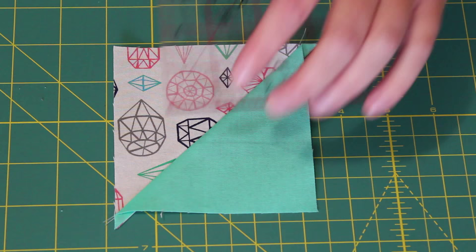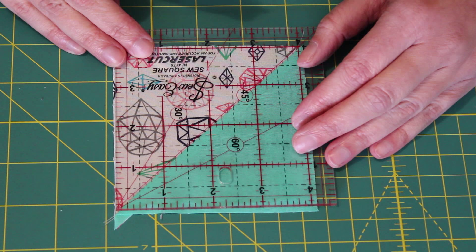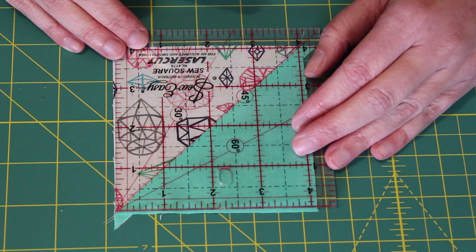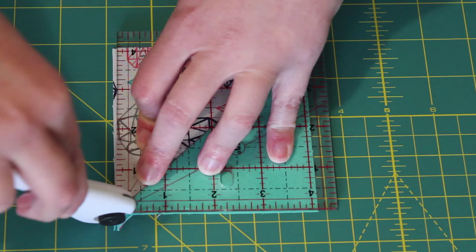To do this, place the 45 degree line along the centre seam while ensuring the 4 inch measurements on the ruler are within the edges of the unit. Trim off any excess along the first two edges.